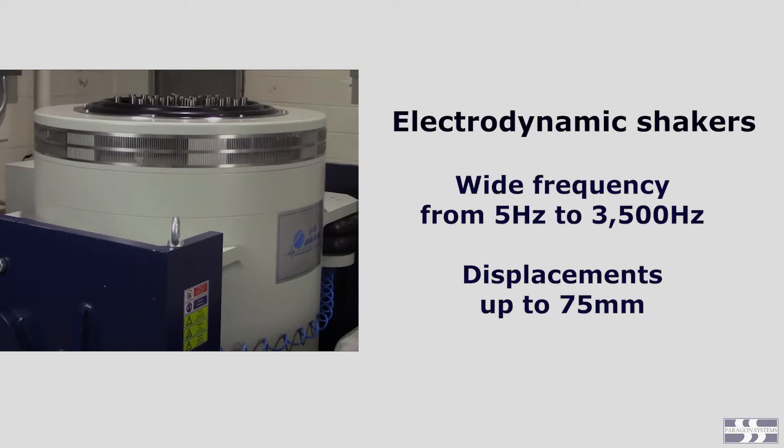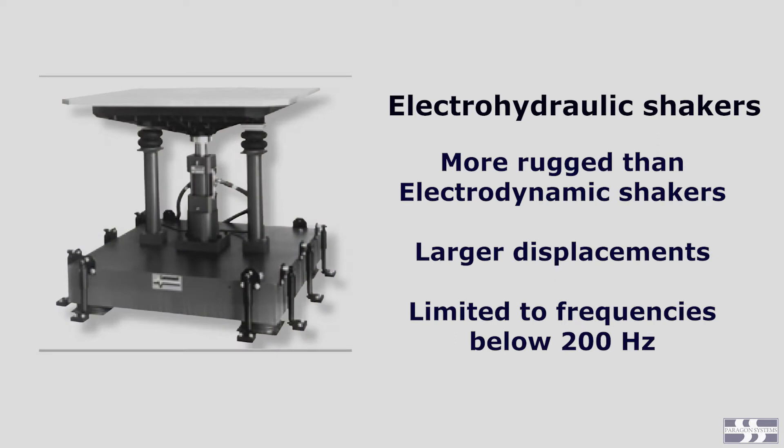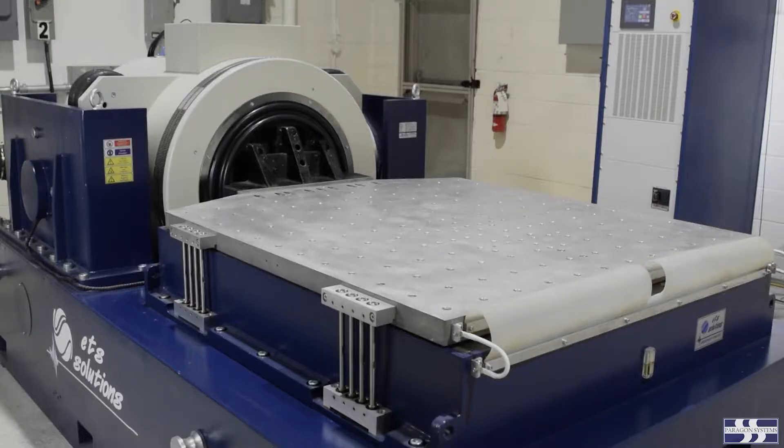Electrodynamic shakers are capable of a wide frequency range from 5 Hertz to 3,500 Hertz and displacements up to 75 millimeters. Electrohydraulic shakers are typically more rugged than electrodynamic shakers and are capable of larger displacements, but are generally limited to frequencies below 200 Hertz.